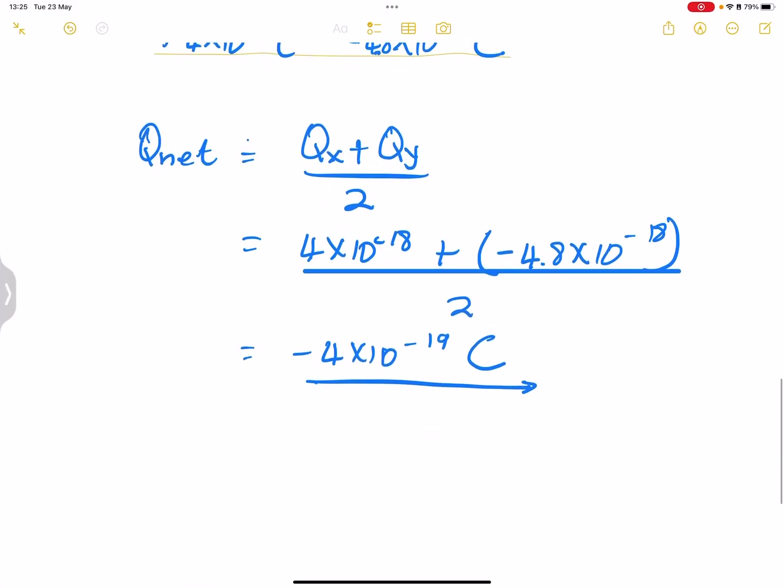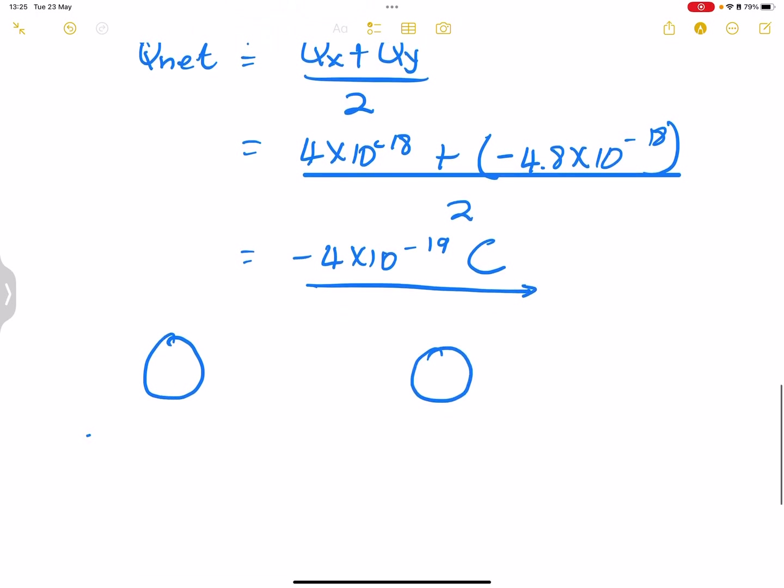So it means each sphere will now have a charge, a negative charge for that matter. So it means electrons were transferred, in this case, from sphere Y to sphere X. That's negative 4 times 10 to the negative 19 Coulombs.